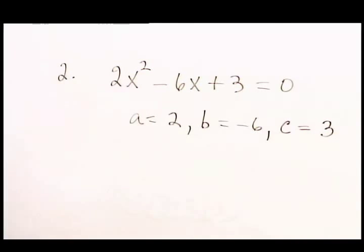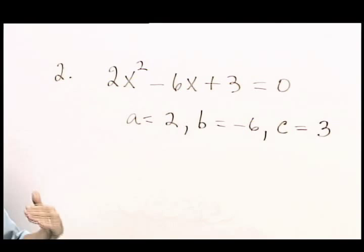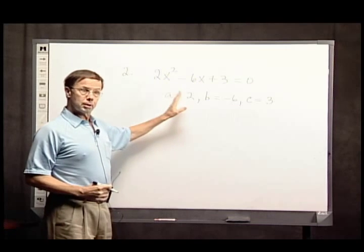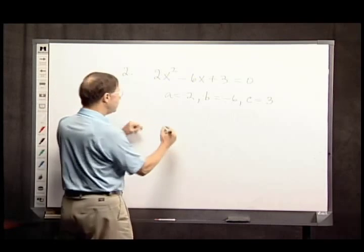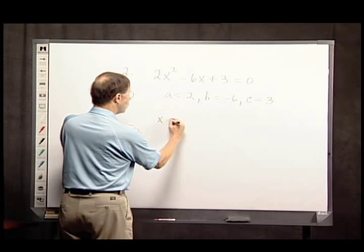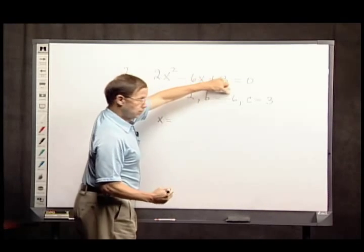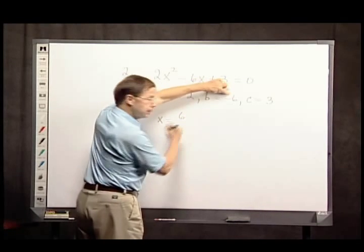I'm not going to write out the quadratic formula. If you've forgotten it, that means it's time for you to review it. The solutions from this, and there will be 2, will be x equals minus B. So minus a negative 6 is 6,